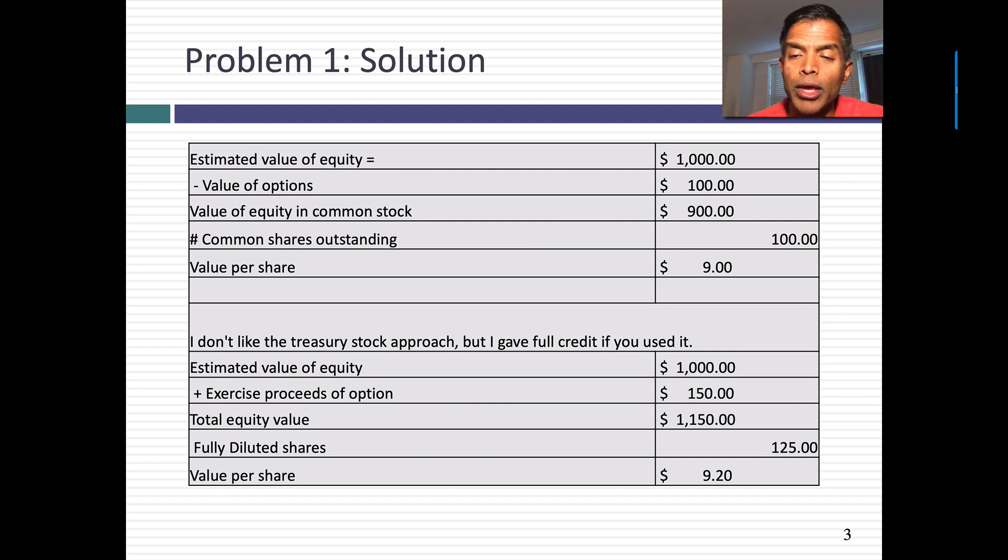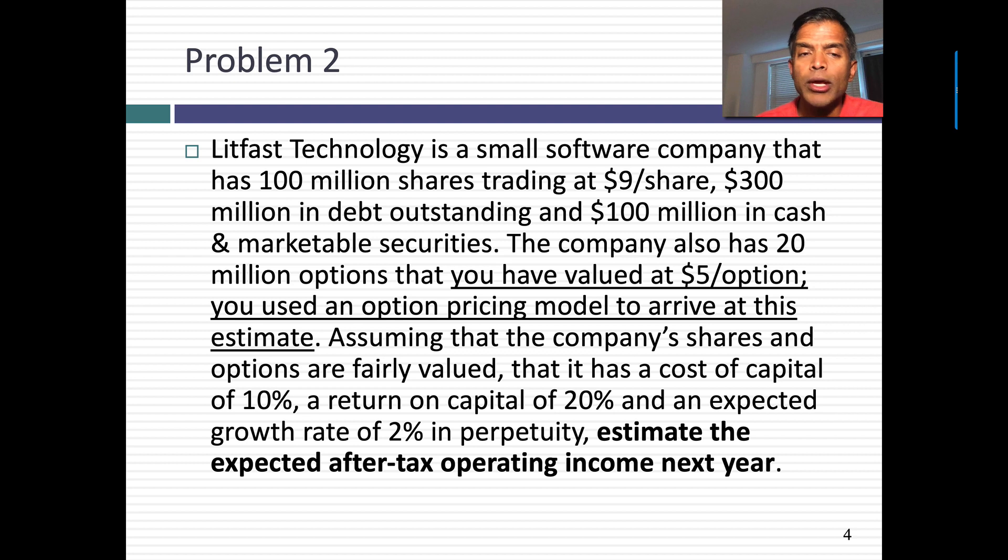Don't mix them up. In other words, don't subtract out the value of options and divide by 125 million shares. That's a no-no. Don't add the exercise proceeds and just divide by the 100 million shares. So make sure you pick your path and stick with it. Because if you mix the paths up, all hell will break loose.